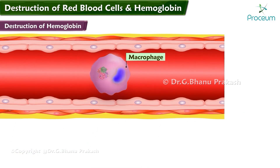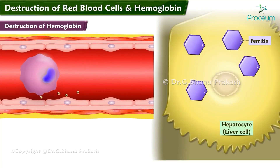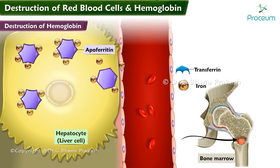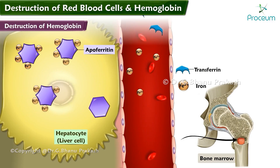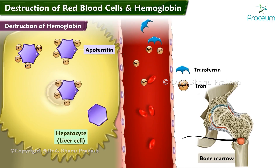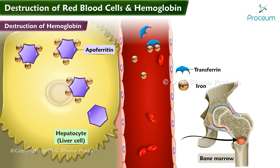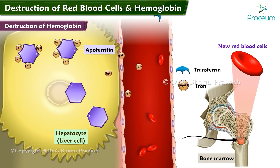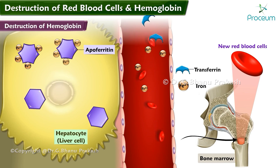During the next few hours to days, the macrophages release iron from the hemoglobin and pass it back into the blood to be carried by transferrin, either to the bone marrow for the production of new red blood cells or to the liver and other tissues